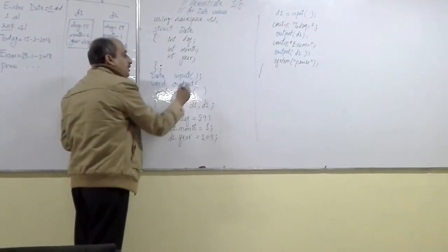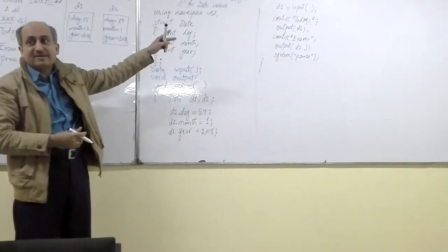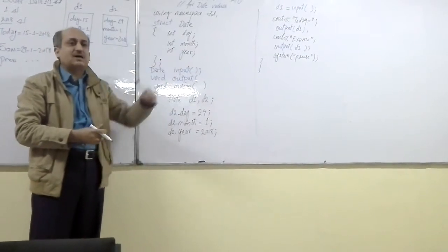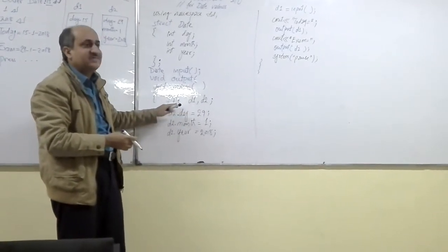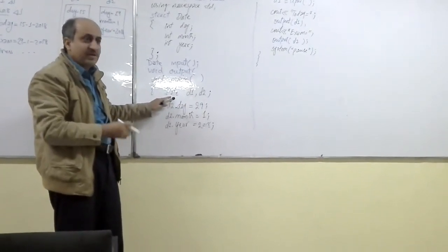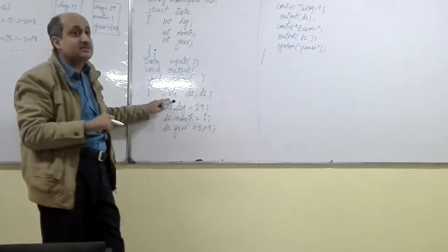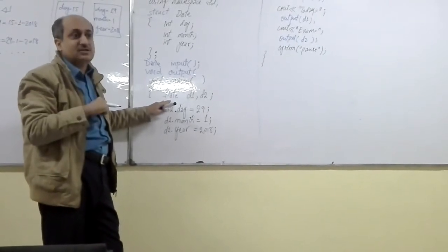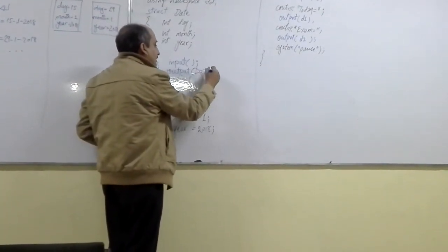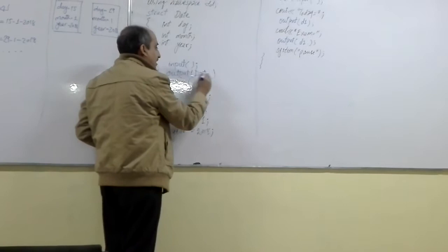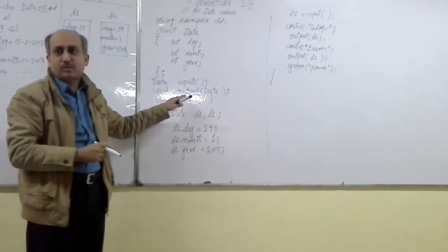The name of the output function is 'output'. From the function calls you can see what type of data is being passed — D1 and D2 are both of date type. Variable names do not matter; they can be a, b, x, y, or any name. But their data type is the programmer-defined date structure. So the output function will take one date type value as its argument. The prototypes of the input and output functions are now complete.